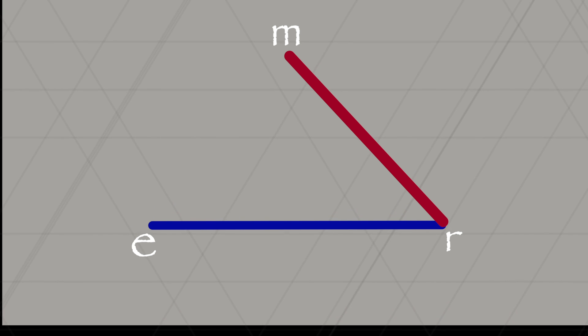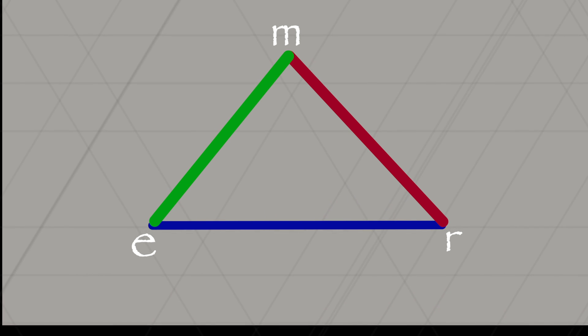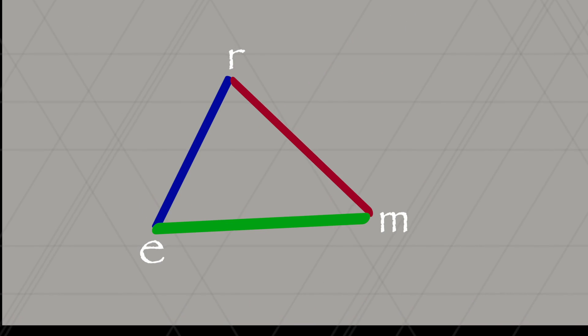E to R is the own ship's course and speed. R to M is the relative motion line of the contact. E to M is the contact's true course and speed. The triangle can take many shapes, but these are the three legs that you must know.